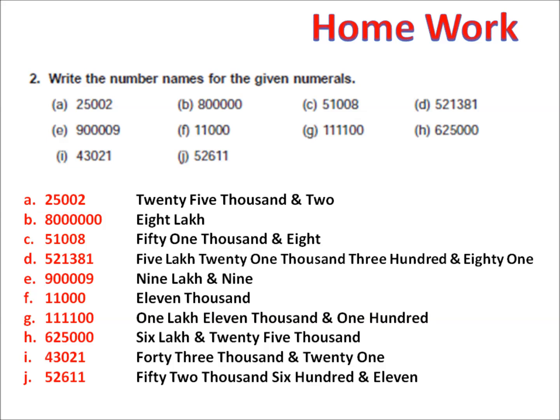Now, one thing you have to keep in mind. In question number A, what you have seen here? 0,0 is given. Wherever 0 is given in A, 0 is at the place of 100s and 10s. So, 0 is mentioned here, but we are not writing 0 hundreds or 0 tens, because it will not be mentioned in the number name. So, we are directly writing 25,002.